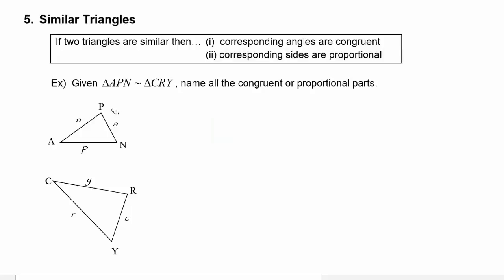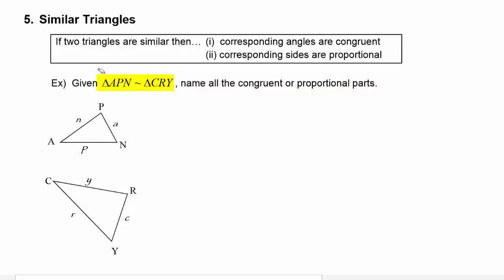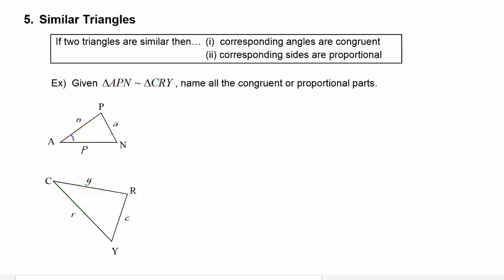If we look at this first example, we have triangle APN is similar to triangle CRY, and we have to name all the congruent or proportional parts. We use the similarity statement to help us, going in the order of the letters given. Letter A comes first in the first triangle, so angle A corresponds to angle C in the second triangle, meaning angle A and angle C are equal to each other.